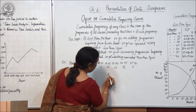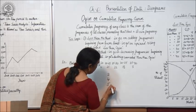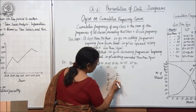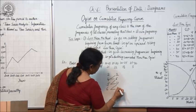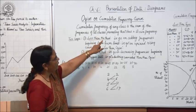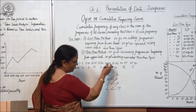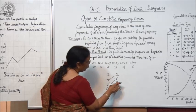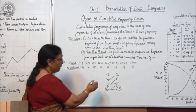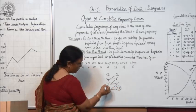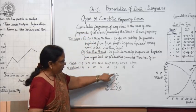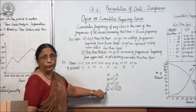For example, if frequencies are 2, 4, 5, 6, then in that case the added up frequencies will be 2, 6, 11, 17. This way we go on adding up. The cumulative frequency of any class is the sum of the frequencies of all classes preceding that class. So this way cumulative frequency is obtained by adding up all the frequencies and the frequency of its own class.